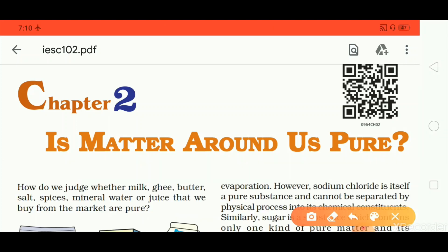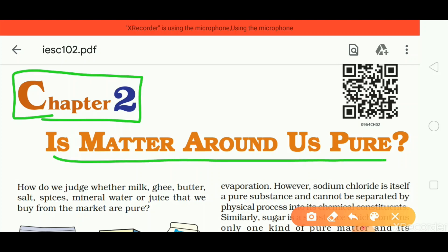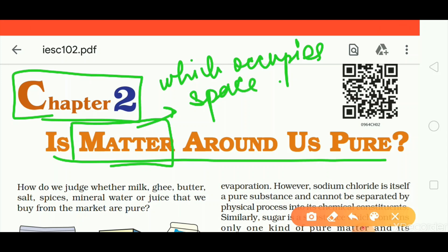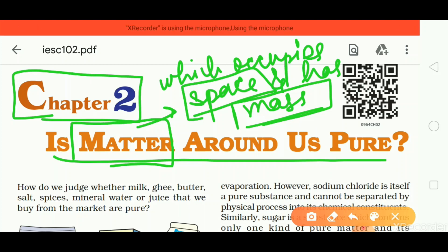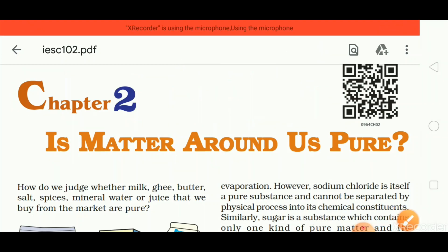Today we are going to start chapter number 2: Matter Around Us Pure. In chapter number 1, you already read about matter. What is matter? Anything which occupies space and has mass is called matter in your universe. Pen, pencil, phone, bed, table, TV - everything has mass and occupies space. Now, how pure is matter? We will read it in this chapter.